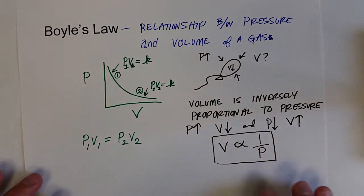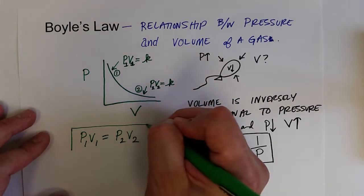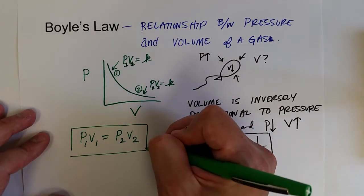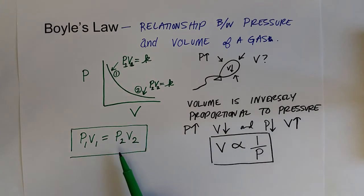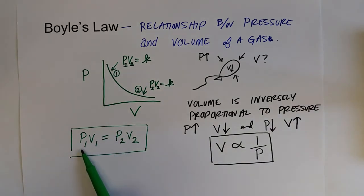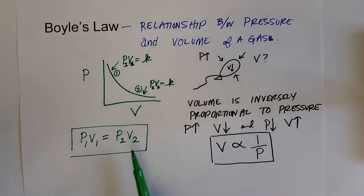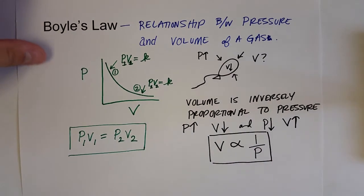This equation gives us the ability to calculate a variable, say the pressure, if the volume has changed. So say we know the initial conditions of pressure and volume, we could ask what happens to the pressure if we do something to the volume, or essentially if we have three of the variables, we can always calculate the fourth. Let's try out one of these examples.